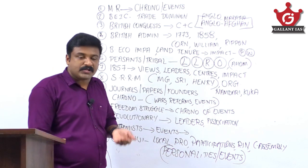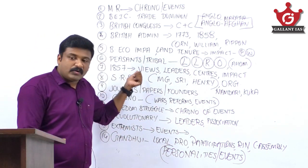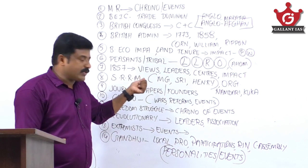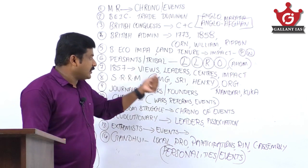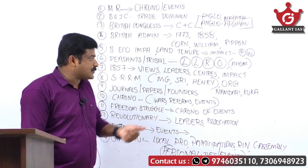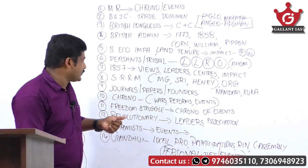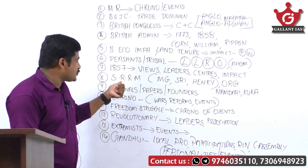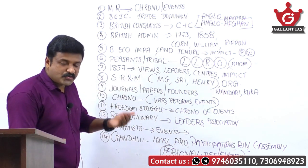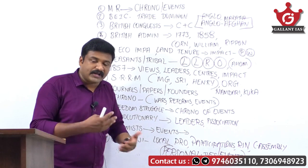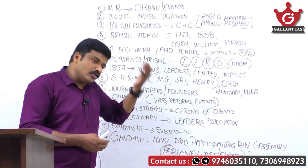Peasant and tribal uprisings are important — their locations, leaders, reasons for the uprisings, and outcomes. The Indigo revolt is important. For the 1857 Mutiny, know the different historians' views on its character and nature, the leaders and centers of the revolt, and its impact.